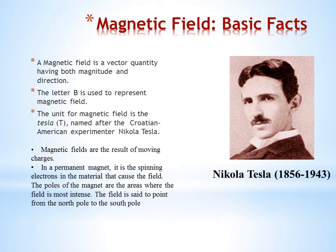Magnetic fields are the results of moving charges. In a permanent magnet, it is the spinning electrons in the material that cause the field. The poles of the magnet are the areas where the field is most intense. The field is set to point from the north pole to the south pole.